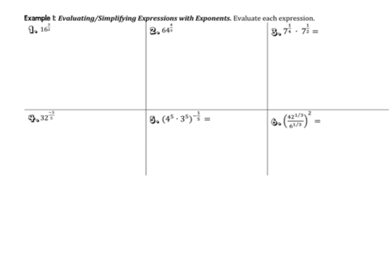For example 1, 16 to the power of 3/2. My first thought is that 16 is the same as 4 squared. So 4 squared to the power of 3/2 — power to a power means we multiply, giving 4 to the 6/2 or 4 to the third, which is 64. Alternatively, rewriting using radicals: the 2 in the denominator means we take the square root of 16 to the third. The square root of 16 is 4 and 4 to the third is 64. Both methods give the same result.